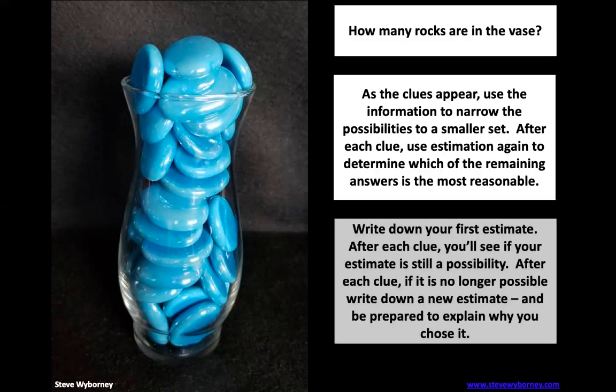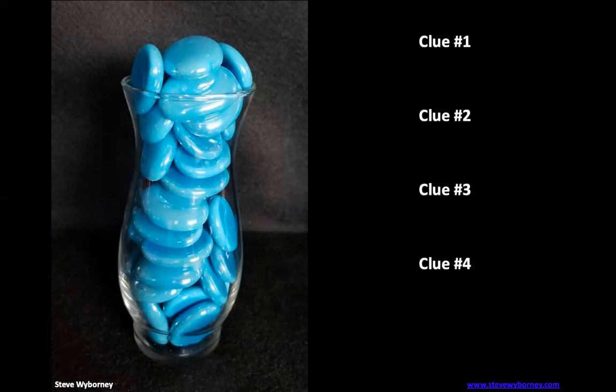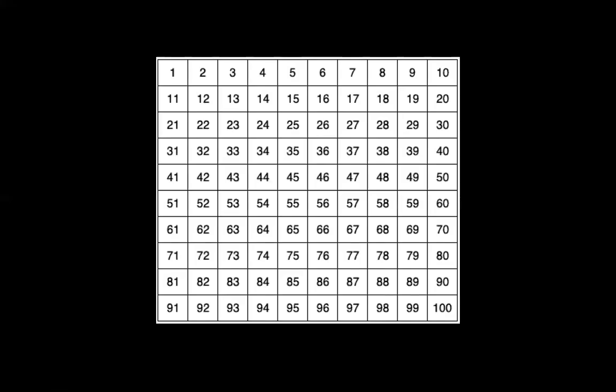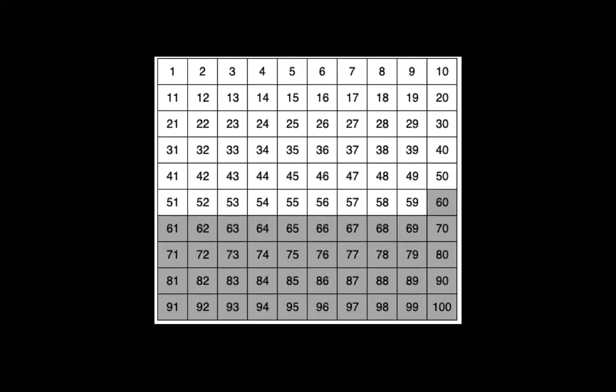All right, let's go ahead and get started. There's gonna be four clues on this one. The first clue is the answer is less than 60. So that means the answer has to be between 1 and 59. So I put together a hundreds chart here, but since we know it's less than 60, we can cross out the numbers 60 all the way to 100. So that leaves 1 through 59. Did we cross out your number? If so, that's okay, go ahead and update your estimate.